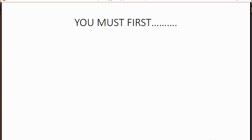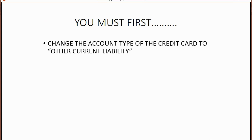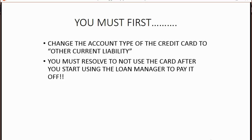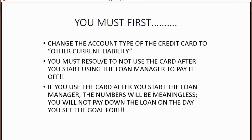First, you must change the account type of the credit card to Other Current Liability. Only Long-Term and Current Liability type accounts will work with the loan manager. You must also resolve not to use the card after you start using the loan manager to pay it off. If you use the card after you start the loan manager, the numbers will be meaningless — you will not pay down the loan on the day you set the goal for, so you have to be very strict and very careful.